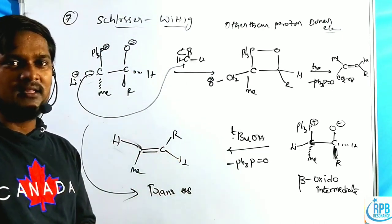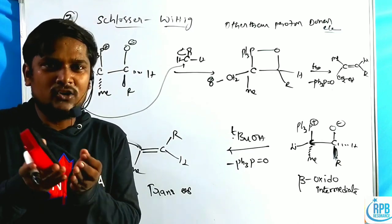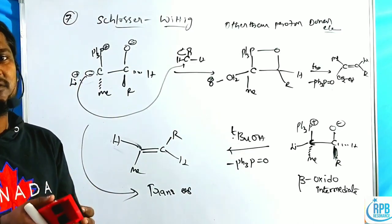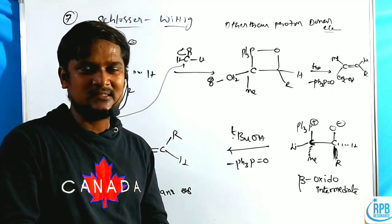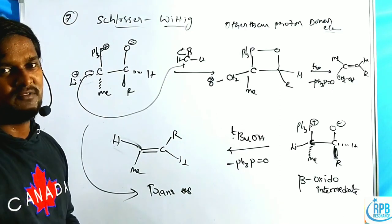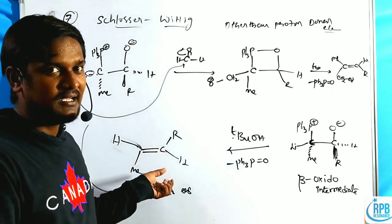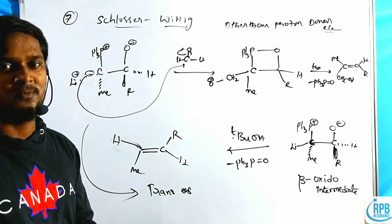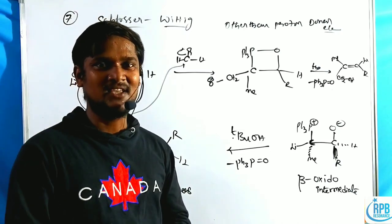So the main theme of the Schlosser modification is that through non-stabilized ylides, we get trans olefins — quite opposite to the regular Wittig reaction. They use organolithium reagents at lower temperature (minus 78 degrees centigrade) with some alcohols, and you get trans olefins as the major product. That is the main advantage of the Schlosser-Wittig reaction. Thank you for watching.